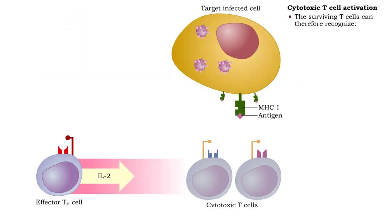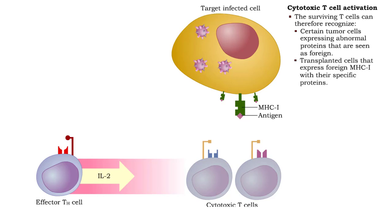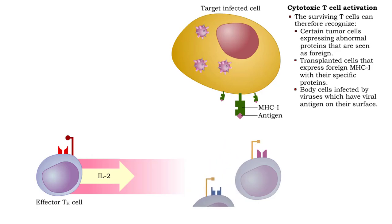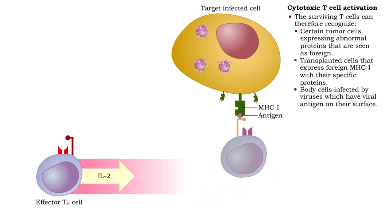Surviving T cells recognize certain tumor cells that express abnormal proteins, seen as foreign; cells of a tissue transplant that express foreign class I MHC; and body cells infected by viruses which have viral antigen on their surface.